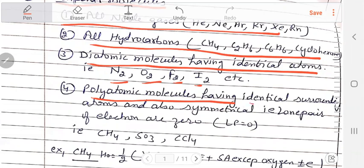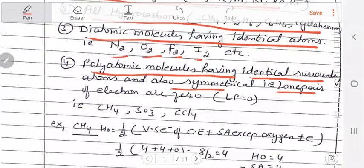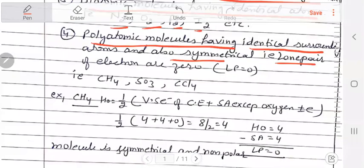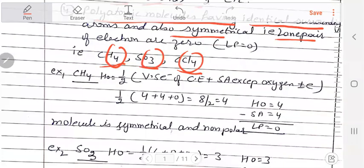If the surrounding atoms are identical and the lone pair is zero, then the molecule will be symmetrical and non-polar. For example, we have CH₄, SO₃, and CCl₄. The surrounding atoms are the same, so we check the lone pairs. I have done hybridization and VSEPR theory before this, and now I am telling you dipole moment. Before studying dipole moment, we need to know geometry using VSEPR theory and hybridization.